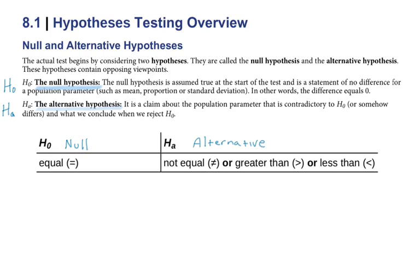But some textbooks actually use the null with greater than or equal, or less than or equal. But typically, when we do research, they tend to let the null be the equal sign. So we're going to go ahead and work them out in that fashion as well.